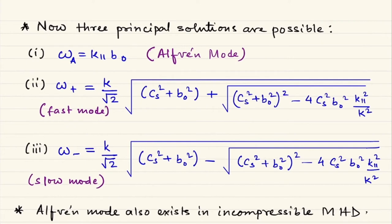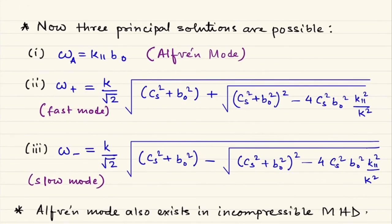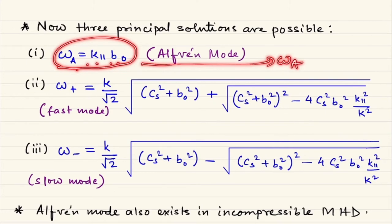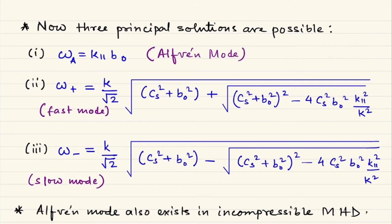Considering only positive solutions of ω, there are three solutions. One comes from the first factor and two from the second. The first solution is the Alfvén mode: ωA = k∥b₀, or equivalently ω = k·b₀.